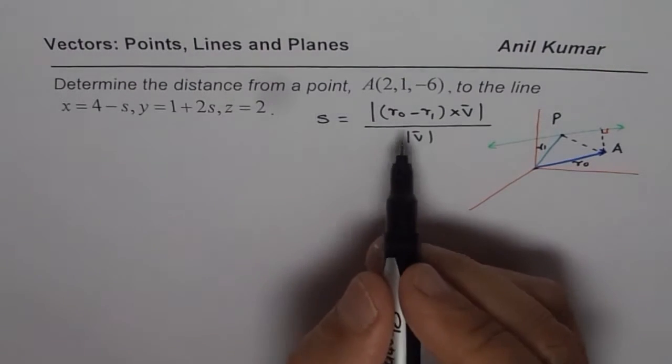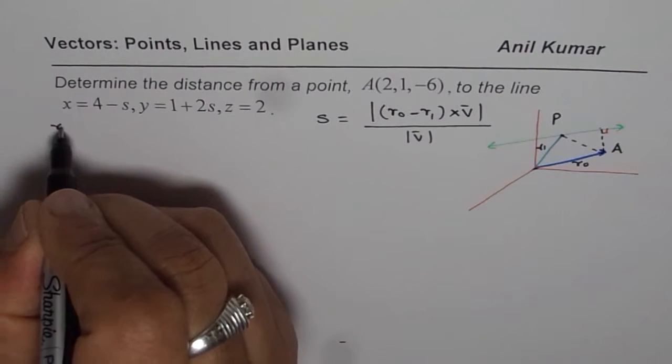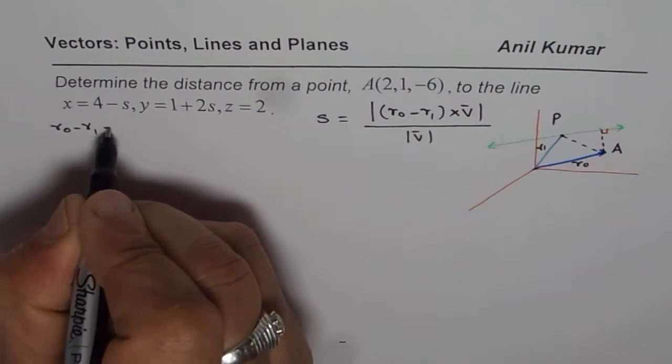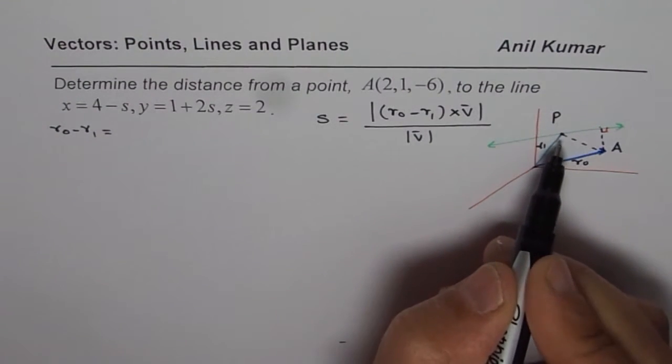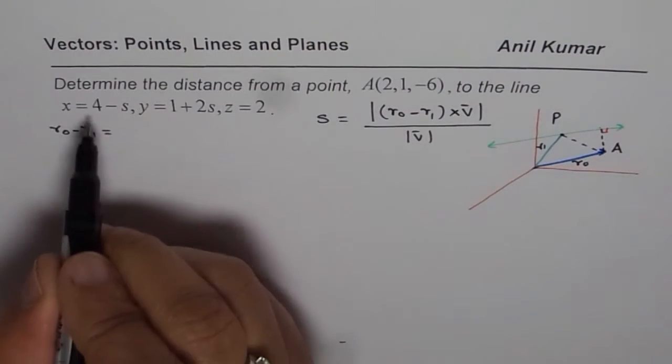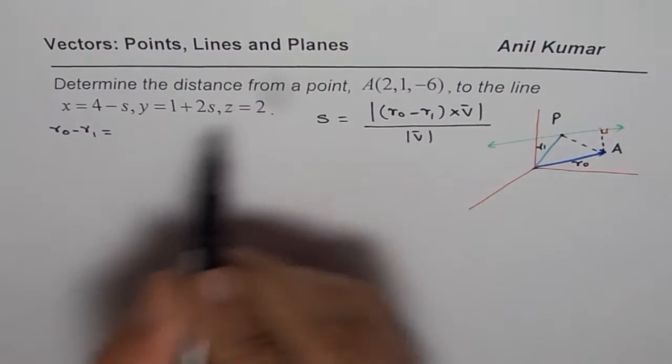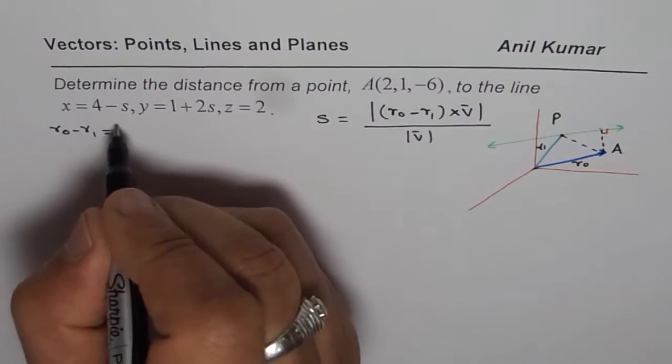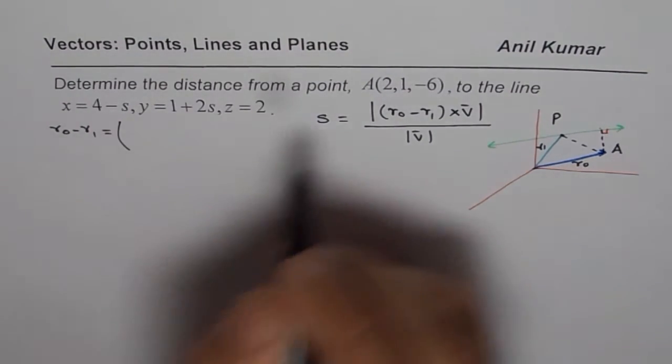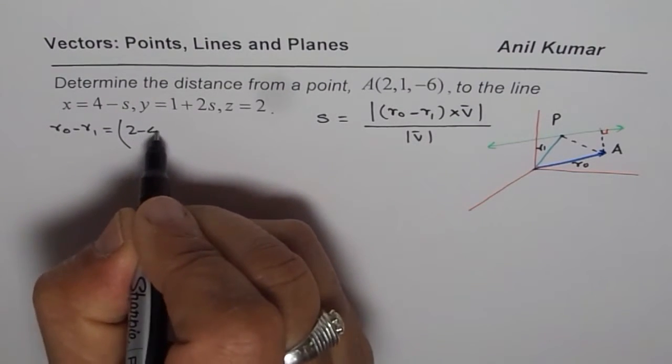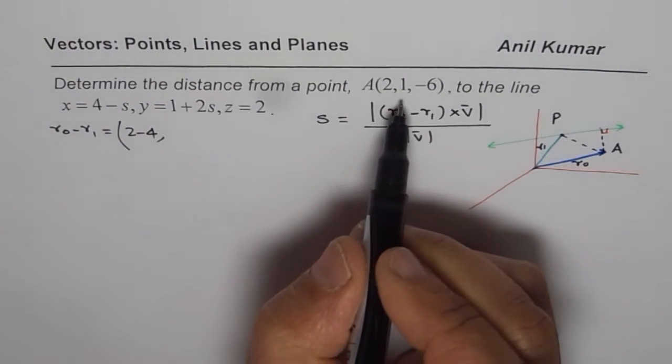Now we'll find what is this R0 minus R1. R0 minus R1. So that gives you the direction between any point in general on the line and the given point. So R0 is 2 minus 4, let us say.